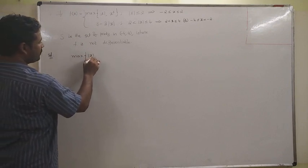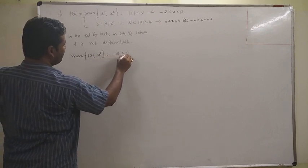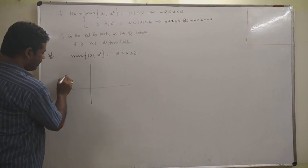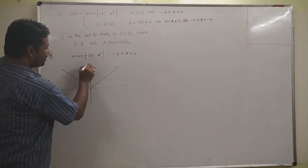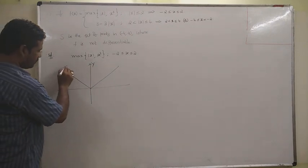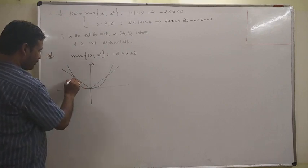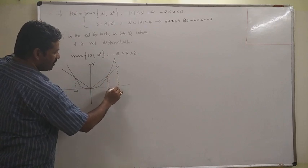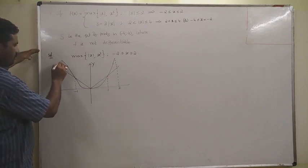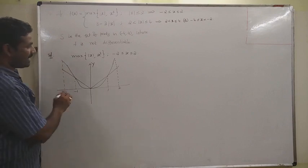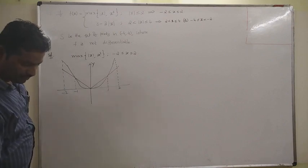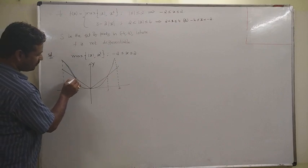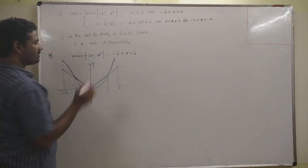First, consider maximum of mod x and x squared on the interval minus 2 to 2. Draw the mod x graph and the x squared curve. These two intersect at x equal to minus 1 and x equal to 1. Between minus 2 and 2, the maximum curve is: x squared from minus 2 to minus 1, then mod x from minus 1 to 1, then x squared from 1 to 2.